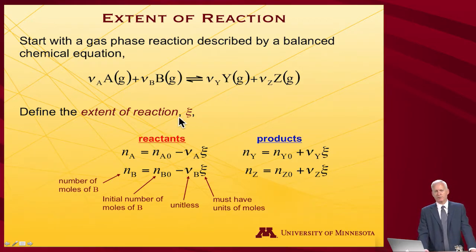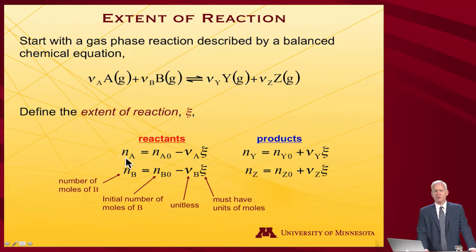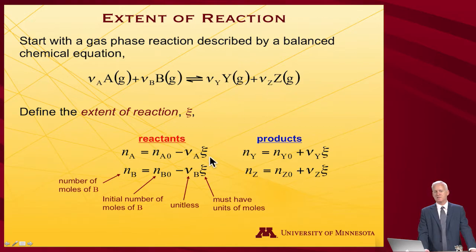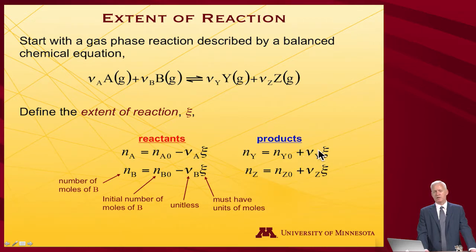The extent of reaction, xi — which I use just because I like to say xi as many times as I can — is defined as how far have things gone. The number of moles of a reactant, in this case reactant A, will be equal to however many moles we started with minus the stoichiometric prefactor times xi. Since both quantities have units of moles and the stoichiometric coefficient is unitless, xi must also have units of moles. For the products, however much product we have will be equal to however much we started with plus the stoichiometric coefficient times xi.